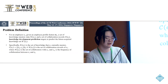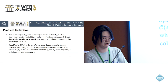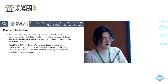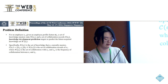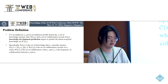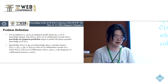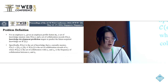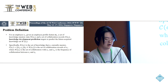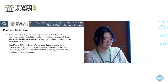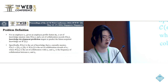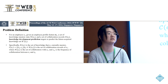The definition of knowledge development prediction is as follows. For an employee, given an employee profile feature, a set of knowledge mastery states, and a set of collaboration records, knowledge development prediction targets to predict the future acquired knowledge set.